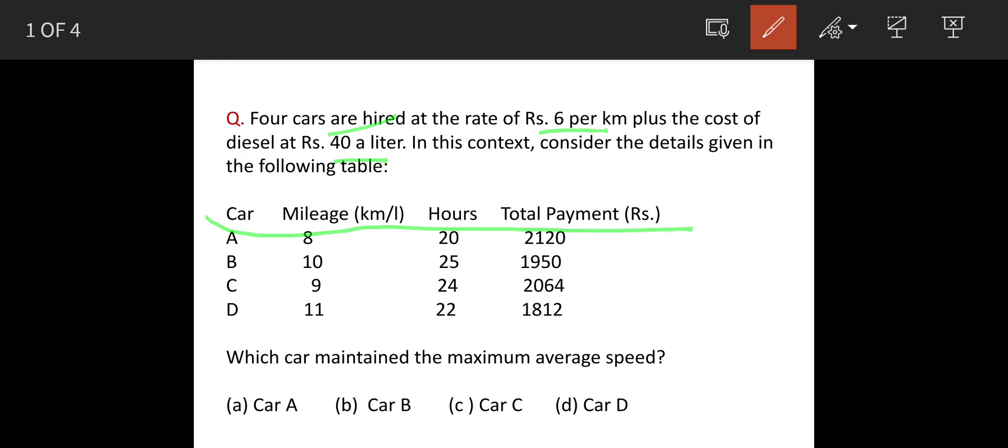Car mileage, that is kilometer per liter. So when you say car A's mileage is 8, that means in 1 liter it is going 8 kilometers. Then total hours of employment and total payment made.